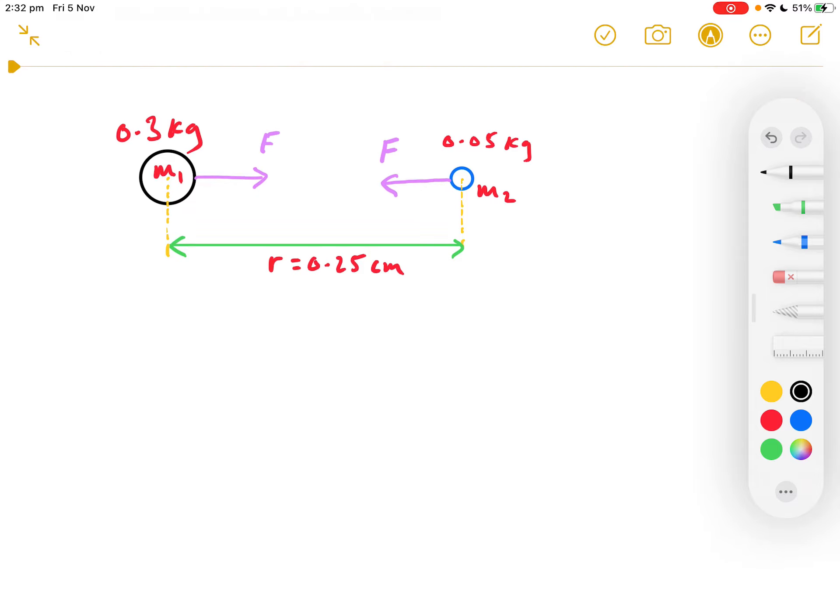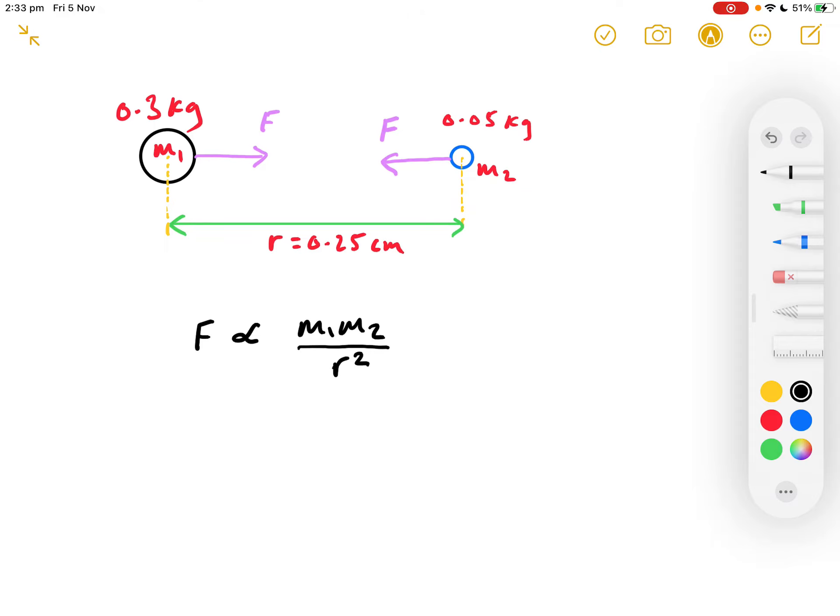Now, what Newton realized was that the size of this force F was directly proportional to the two masses multiplied together, but inversely proportional to the square of their separation distance, R.